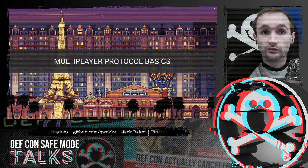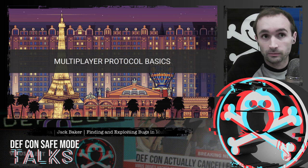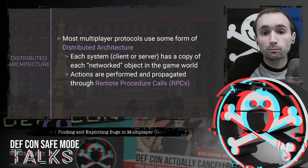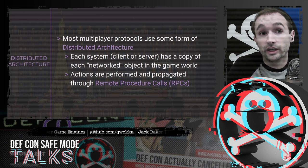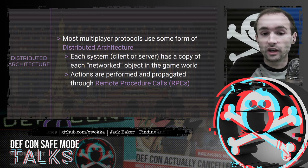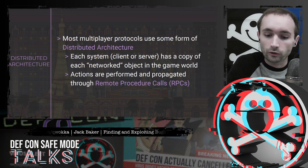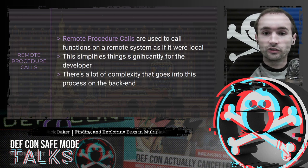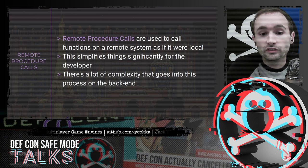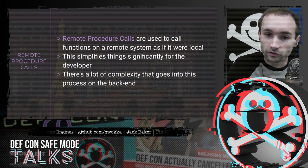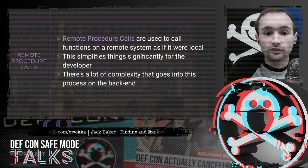Let's talk about some technical specifics of multiplayer protocols. There's no published standard, but a few things are consistent between protocols. Most multiplayer protocols use some form of distributed architecture, meaning each system — whether client or server — has a copy of every networked object in the game world. Actions between objects and systems are performed through remote procedure calls, which are a way of calling functions on a remote system as if you were calling them locally, even though that function is executing on someone else's system.